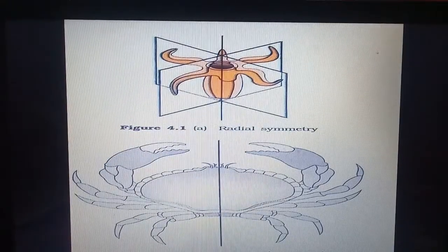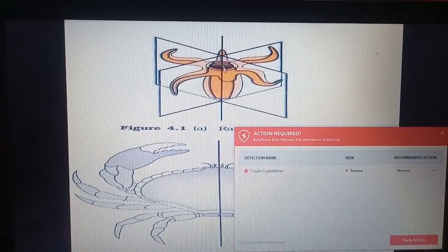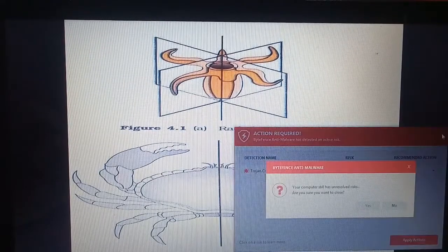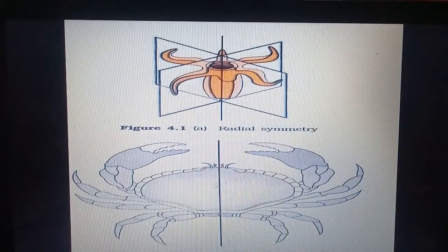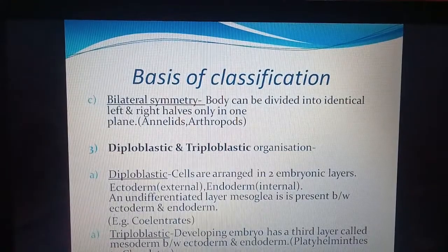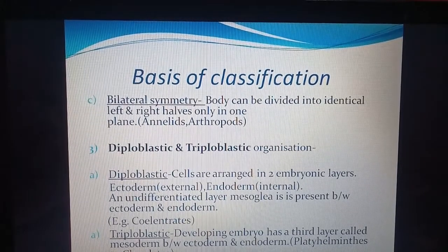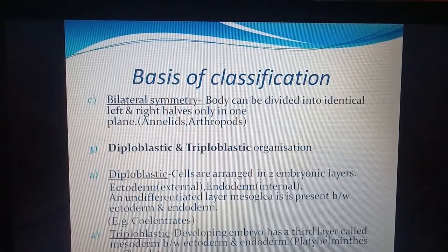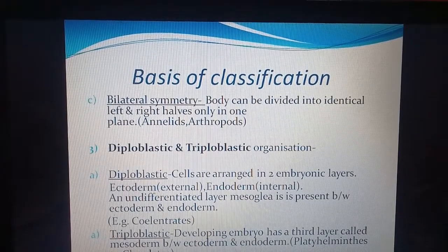In a diagram we can see radial symmetry in hydra — it can be divided into many equal parts along the radius. In the lower part we can see a crab, where a single line divides the body into two equal halves — this is called bilateral symmetry. Bilateral symmetry means the body can be divided into identical left and right halves in only one plane. Examples are annelids and arthropods.